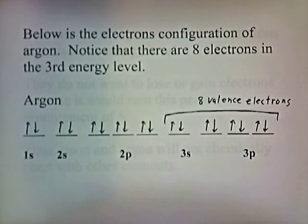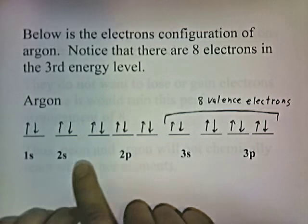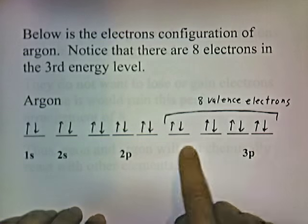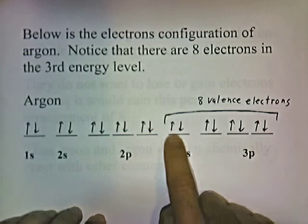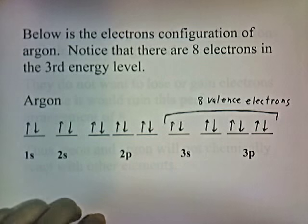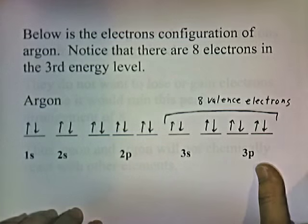Below is the electron configuration of argon, and notice that there are eight electrons in the third energy level for argon. The third energy level is the highest energy level with electrons: two, four, six, eight — eight outer electrons. Argon has an octet.